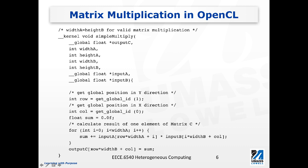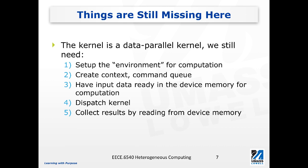The kernel function cannot be executed on its own on the FPGA or GPU within the OpenCL programming framework. We still need to set up the environment for computation. This environment is platform-dependent — we need to understand available resources such as number of compute units and memory size. Following that, we create a context and command queue, which are abstractions of the resources available on OpenCL. With context and command queue, we can manipulate input/output data and instantiate kernels.